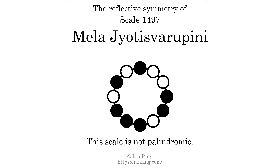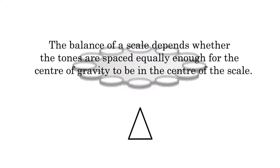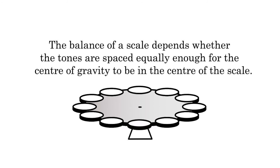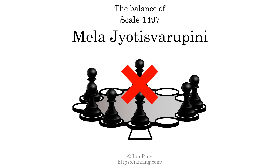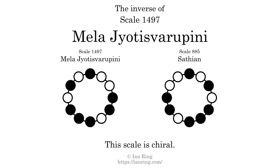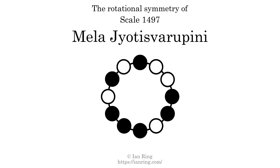This scale has no reflective symmetry. This scale has a different pattern of intervals ascending and descending, so it is not palindromic. This scale has no ridge tones. The balance of a scale depends on whether the tones are spaced equally enough for the center of gravity to be in the center of the scale. This scale is not balanced. The inverse of a scale is a mirror image — it is what you get when the sequence of intervals is reversed. The inverse of this scale is scale 885, also known as Sathean. This scale is chiral; it cannot transform into its inverse by rotational transformation. This scale has no rotational symmetry.